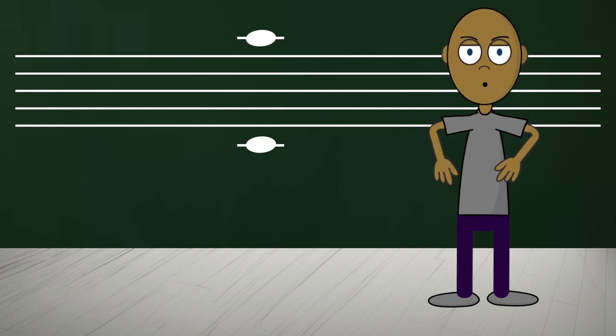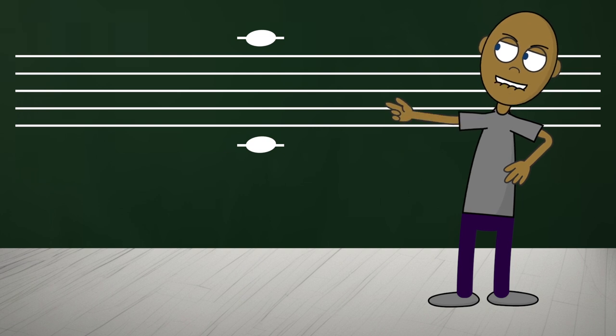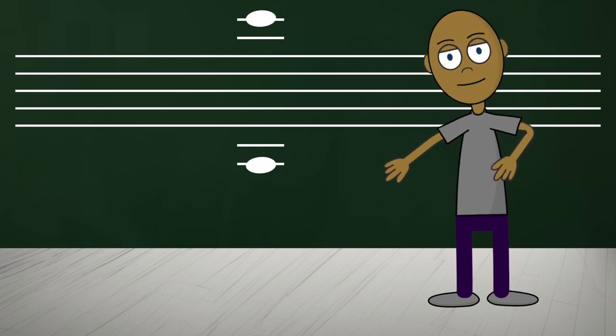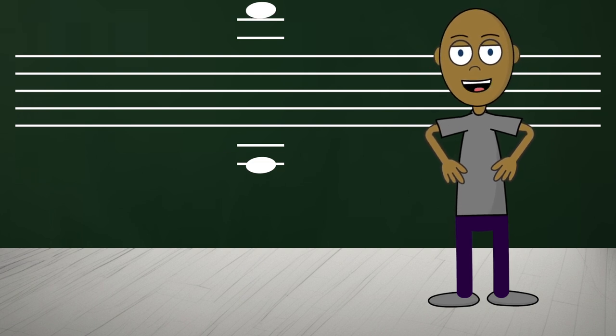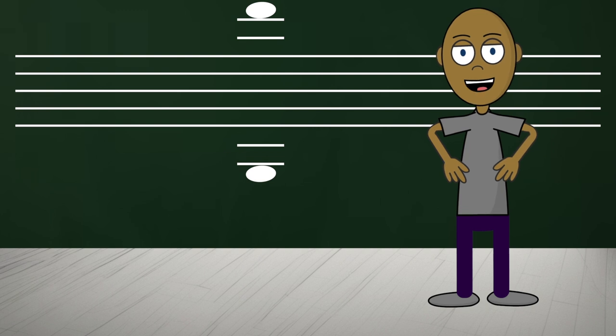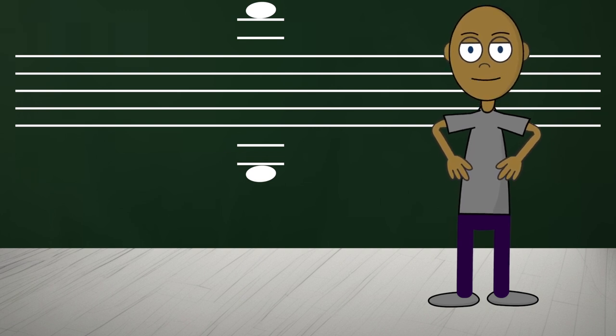With ledger lines, you can place the note above the staff or below it. You can add a line or place it above the line or below the line. All of this extends the range of the notes we can play.